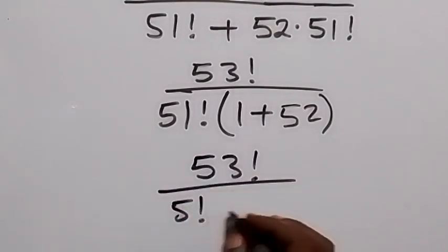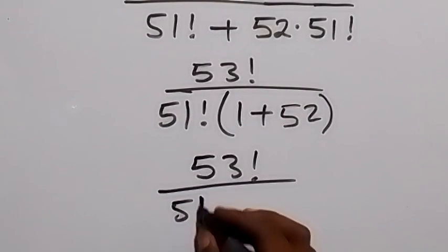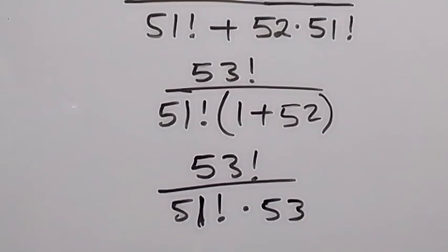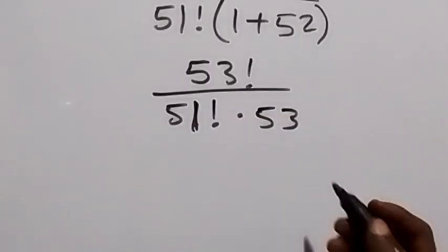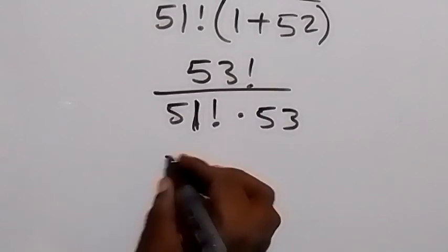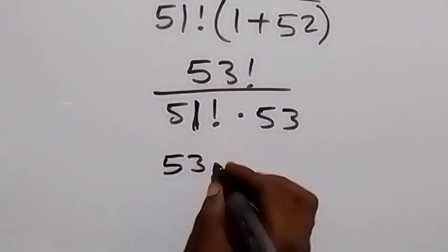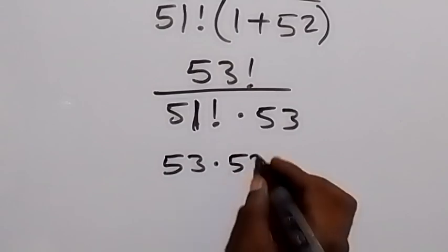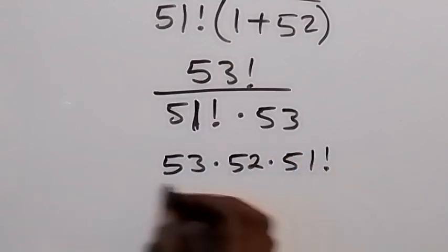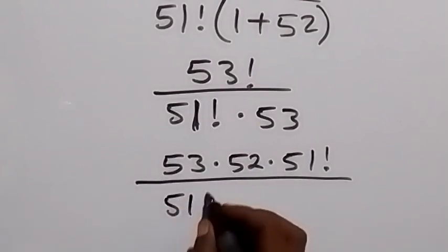From here we can write 53 factorial, and that can be written as 53 multiply by 52, then multiply by 51 factorial, then divided by 51 factorial, then 53.